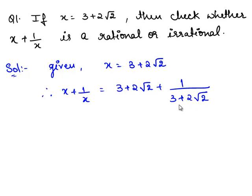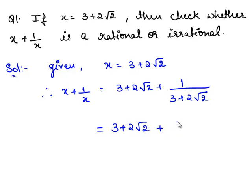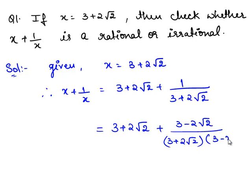Now, we shall rationalize 3 plus 2 root 2 which is present in the denominator. We shall multiply 3 plus 2 root 2 with 3 minus 2 root 2 on both the numerator and denominator to rationalize the denominator. So, we have 3 plus 2 root 2 plus 3 minus 2 root 2 divided by 3 plus 2 root 2 times 3 minus 2 root 2.